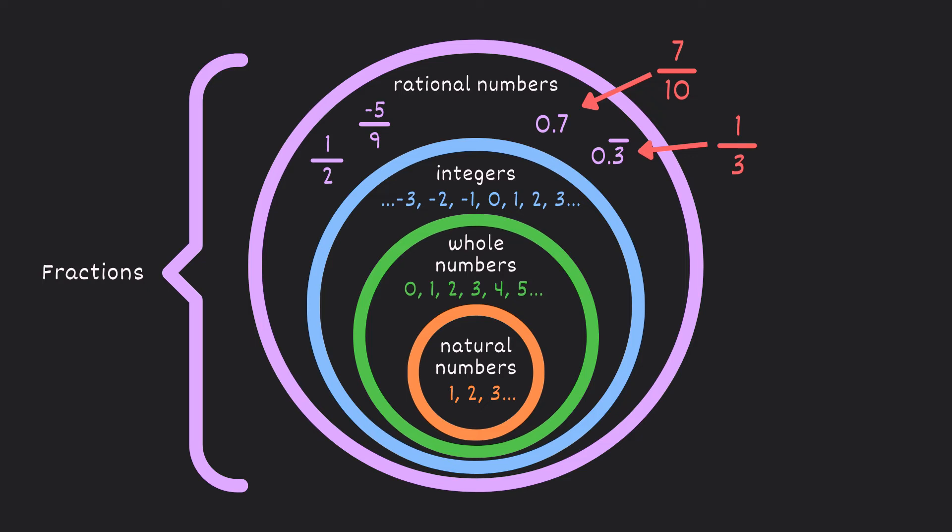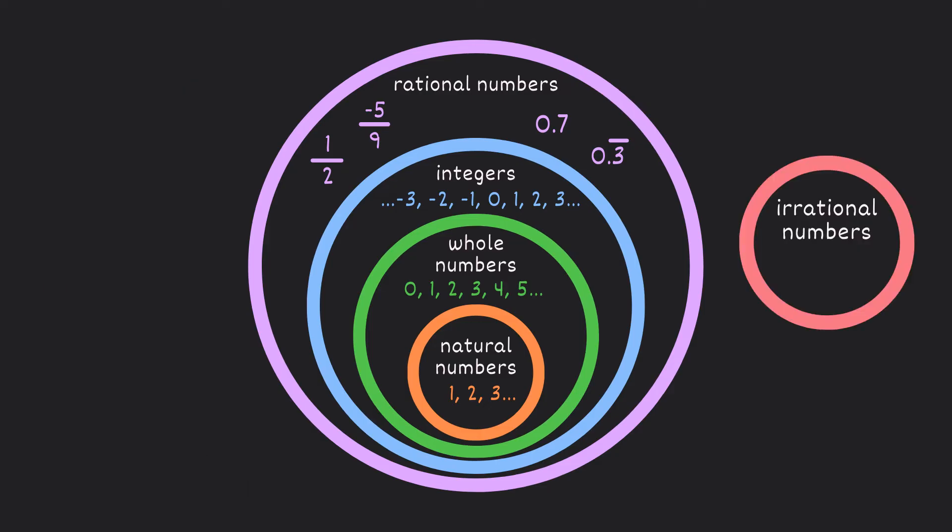But then are there any numbers in the world that can't be written as a fraction? Yes, there are. And these are called irrational numbers, but they can't sit with the rest of the crew. Now, irrational numbers are just numbers that cannot be written as a fraction. You probably know the number pi that's pretty famous, and that is 3.14159 and so on. That's irrational. Or how about the golden ratio? And actually, a lot of square roots are irrational numbers, like the square root of 2 and the square root of 3.